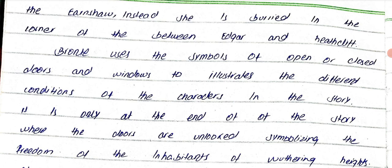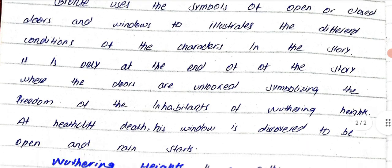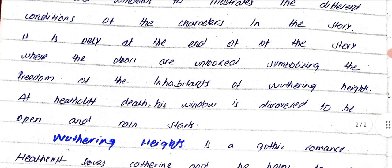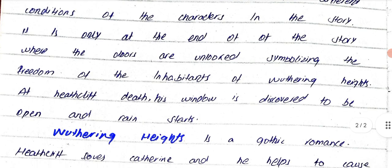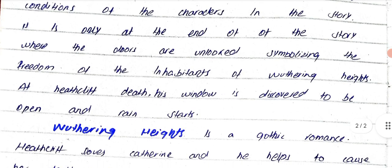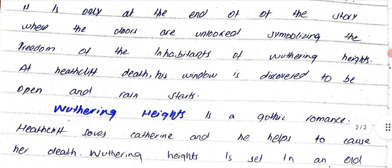It is only at the end of the story where the doors are unlocked, symbolizing freedom of the inhabitants of Wuthering Heights. At Heathcliff's death, his window is discovered to be open and the rain comes in.